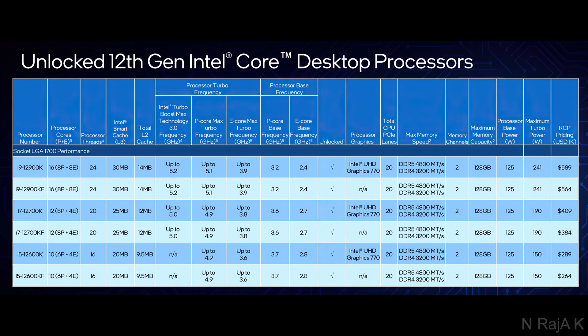The i9-12900K has up to 16 cores total. Turbo Boost Max Technology 3.0 frequency goes up to 5.2 GHz boost. Performance Cores maximum boost is 5.1 GHz, base is 3.2 GHz. Efficient Cores maximum boost is 3.9 GHz, base is 2.4 GHz. UHD Graphics 770. Total CPU PCIe lanes: 20. Maximum RAM speed: DDR5 at 4,800 MHz or DDR4 at 3,200 MHz. Maximum memory capacity is 128 GB. Base power is 125W, maximum turbo power is 241W.